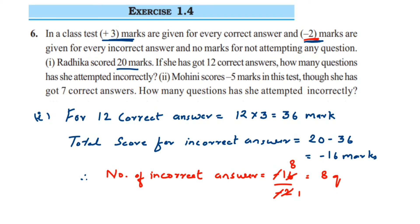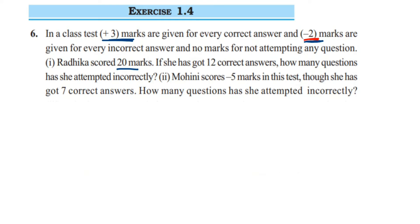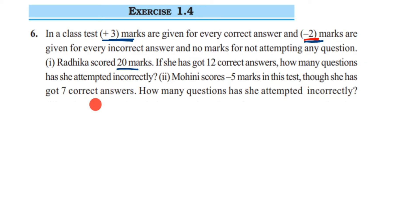The second question is similar. Mohini scores minus 5 marks in this test — the total score is minus 5 — though she has got 7 correct answers. How many questions has she attempted incorrectly? Total score is minus 5, which means she has attempted more incorrect answers, and she has attempted 7 correct answers.